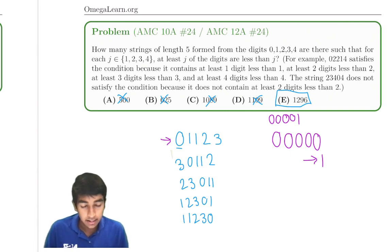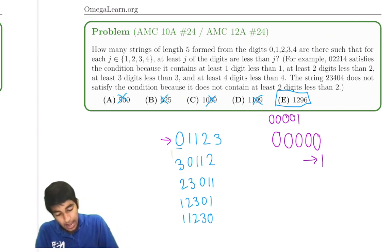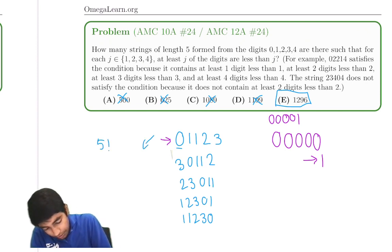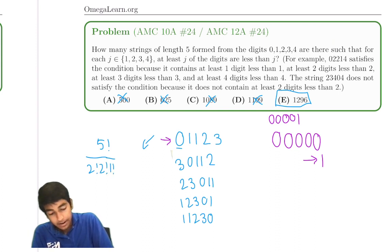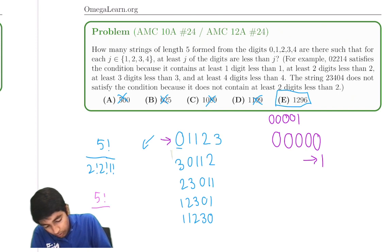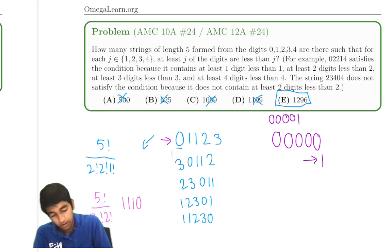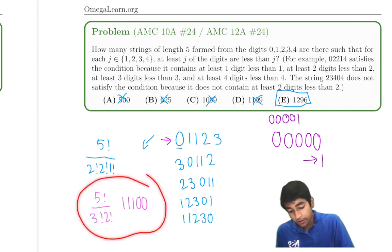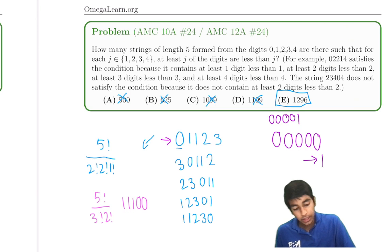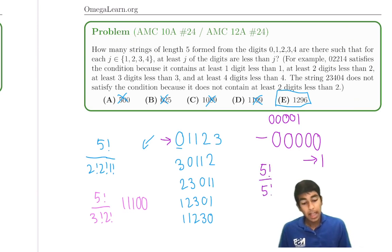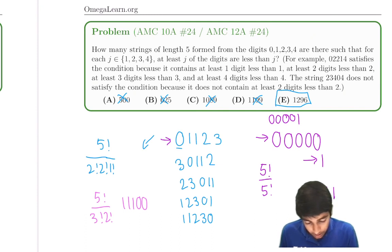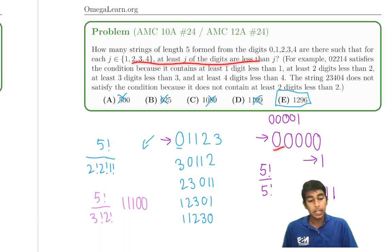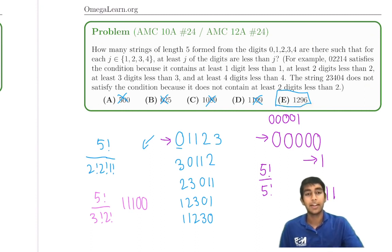Alternatively, every valid arrangement has a multinomial count of 5! divided by the product of digit-frequency factorials. This is always a multiple of 5 unless one factorial in the denominator is 5!, which only happens when all five digits are the same. The only valid all-same arrangement would require a 0 in every slot, giving {0,0,0,0,0}, confirming the answer is 1 mod 5, so answer E. Thanks for watching!